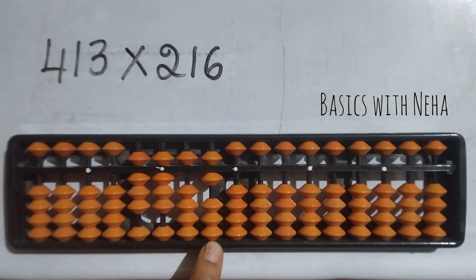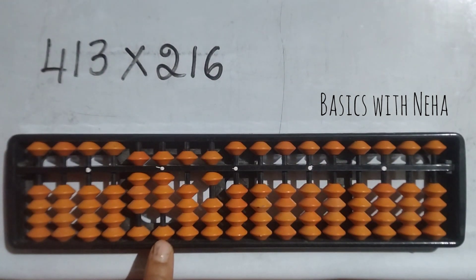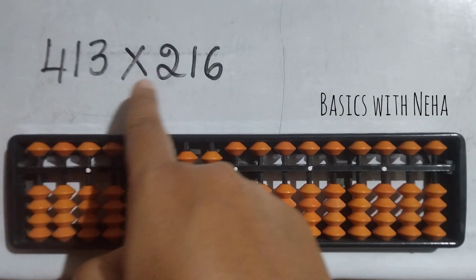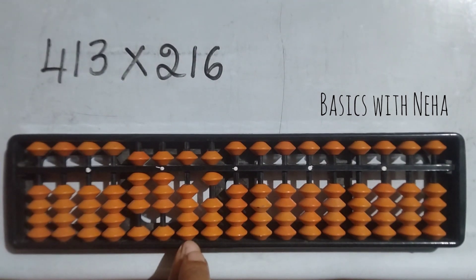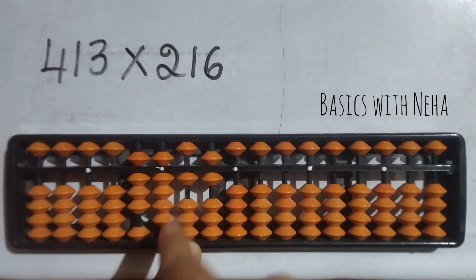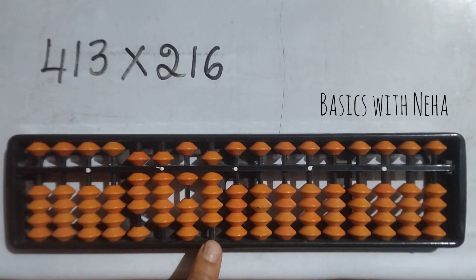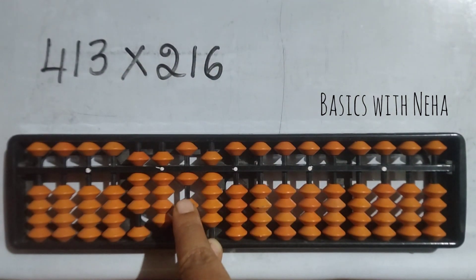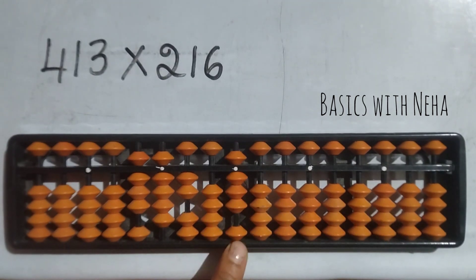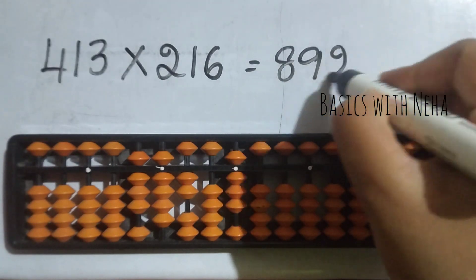Now we are done with 1 into 216. Now it is 3 into 216 — we'll have four digits, start from the fourth rod from the house pointer ones rod. 3 twos are 6 — it will be zero and six, to be represented here which is plus ten minus five plus one. 3 ones are 3 — it is zero three. 3 sixes are 18 — one should be placed here which is plus ten minus nine, and eight. So the answer to this question is 89208.